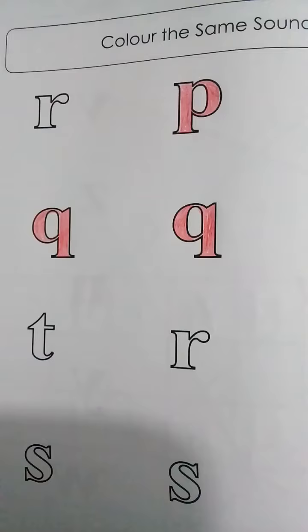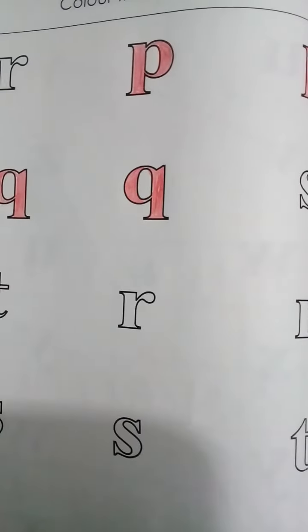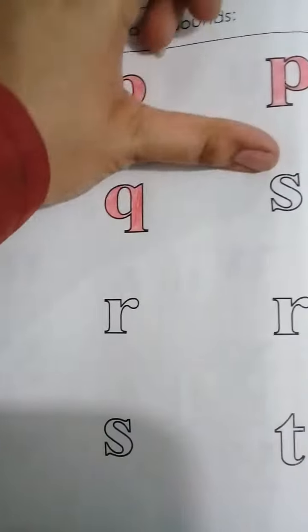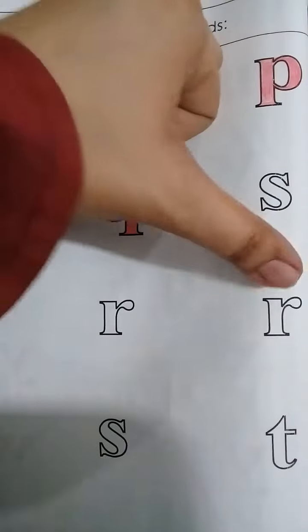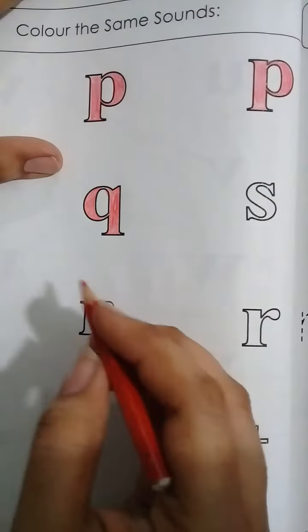We've done this coloring. Now come to the next line - there are also three sounds in this line. Two are the same, so we color these.